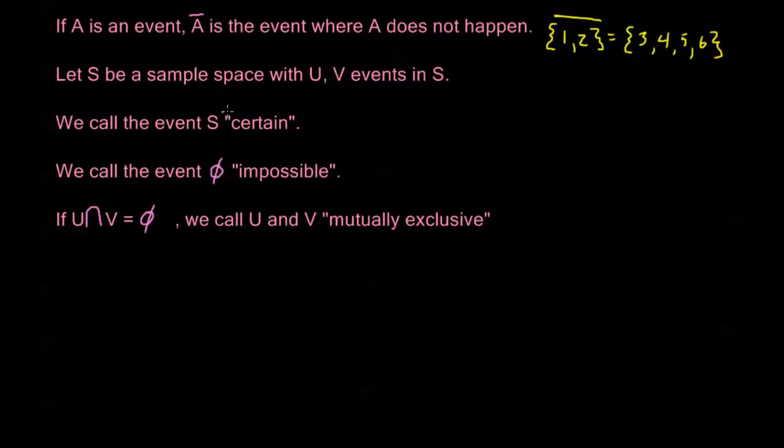Now let S be a sample space with U and V events in S. So we call the event S certain. Now this makes sense. In our example with rolling a die, the event S is just {1, 2, 3, 4, 5, 6}. If we roll a die, we're going to get 1, 2, 3, 4, 5, or 6. One of these is going to show up on the die. So the event S, the entire sample space as an event, is certain. It means one of these must happen when the experiment takes place.